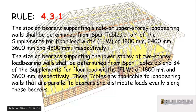Rule 4.3.1 says that the size of bearers supporting the single or upper story load-bearing walls shall be determined from span tables 1 to 4 of the supplements for the floor load width. A floor load width of 1,200 uses table 1, 2,400 uses table 2, 3,600 uses table 3, and 4,800 uses table 4.